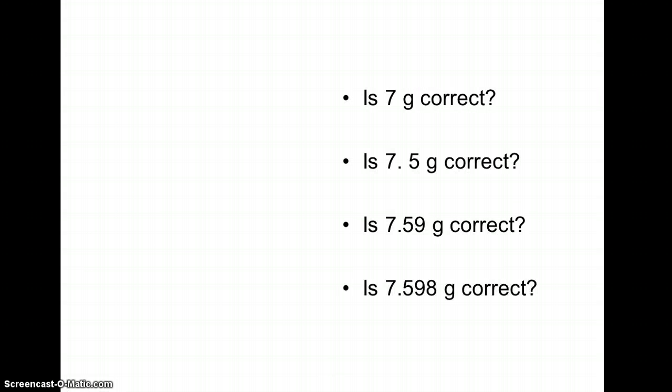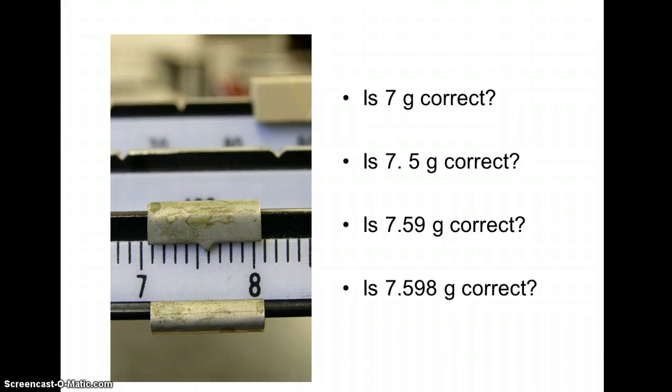Here's another example. This is from an old triple beam balance. You guys are lucky. You have digital balances to work with in our lab. But you may have seen scales like this in a doctor's office or a weight room. In this case, the slider point right here indicates where our measurement is being made. Seven grams? Is that good enough? No. Our measurement, I have the ability to measure with tenths.